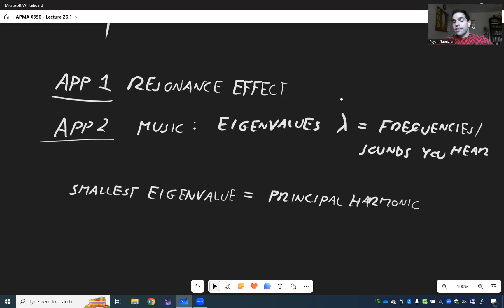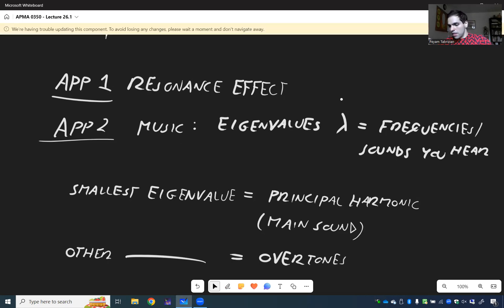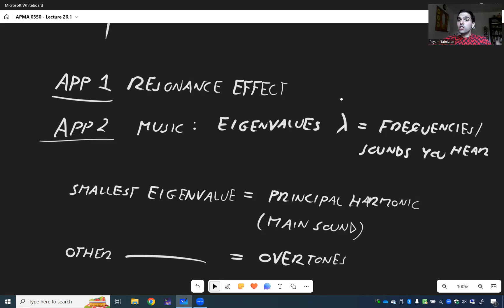And the other eigenvalues there are called the overtones. Sounds like a cool name for a band, the overtones. So think you play a drum, you hear that sound, that's the principal harmonic. And all the other smaller sounds, those are the overtones.